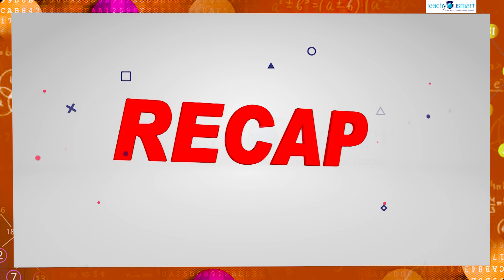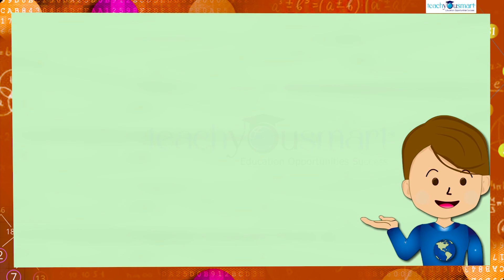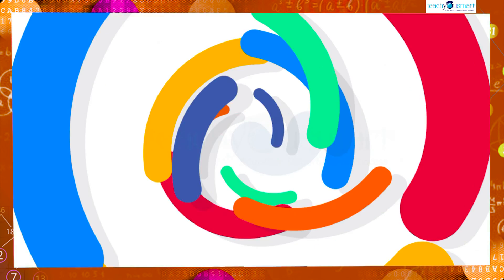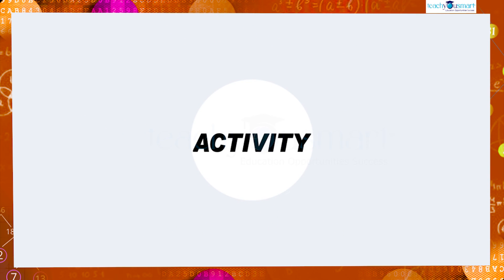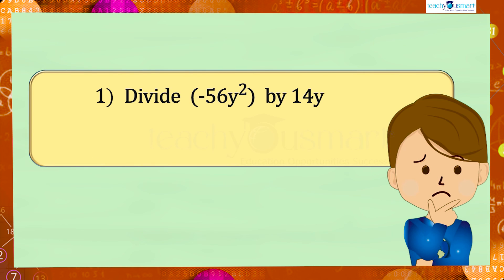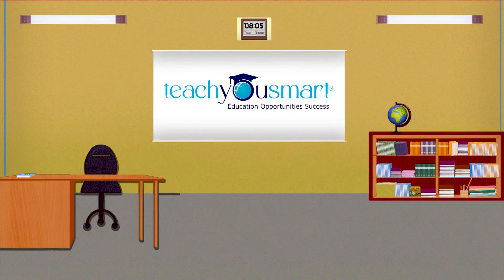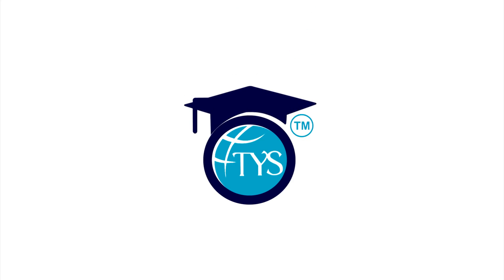Today we discussed the division of a monomial by another monomial. Before winding up, let's check how much you understood by doing an activity. First: divide −56y² by 14y. Second: divide 128ab²c³ by 48a³b²c. That's all for now — see you all in the next class. Thank you.